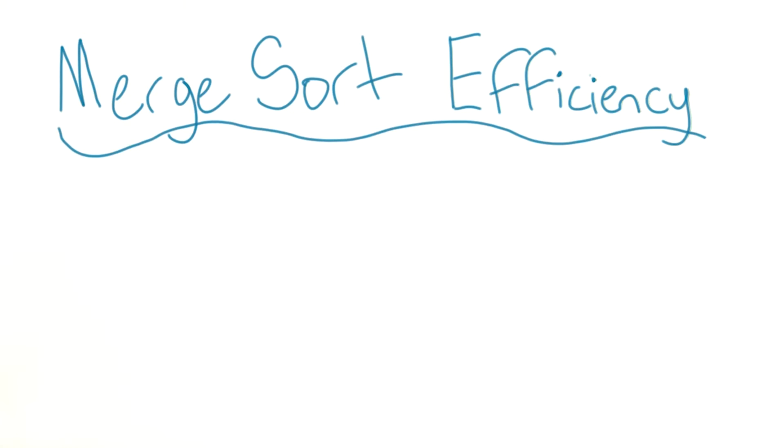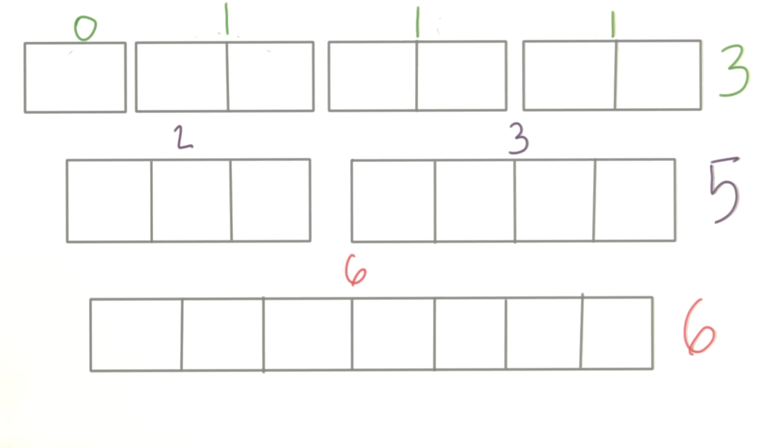So how many overall comparisons was that? Well, let's try to find a pattern here. It looks like at each step we did one less comparison than the array we were building. So when we were building an array of seven, we only did six comparisons.